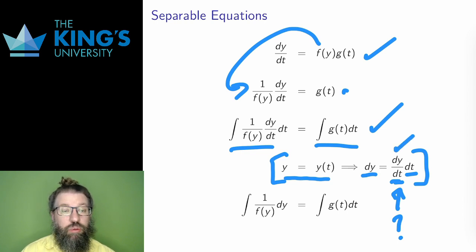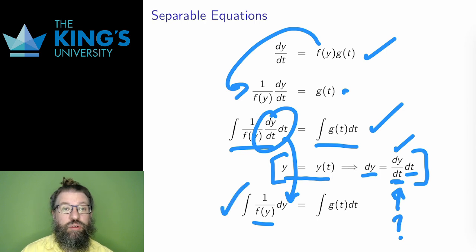Well, then I can make the replacements. 1 over f of y remains the same, but now I think of y as the variable for integration. dy over dt times dt becomes dy according to the substitution. The result of all of this is an integral on the left in y, and an integral on the right in t.